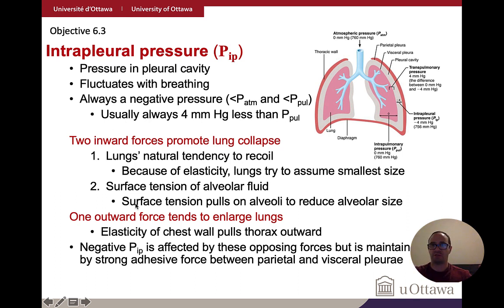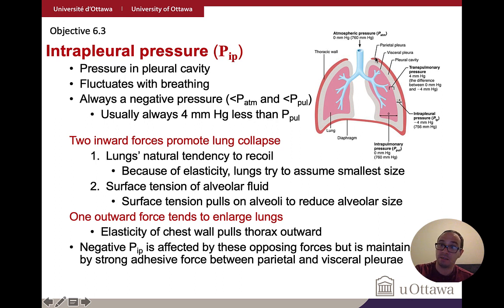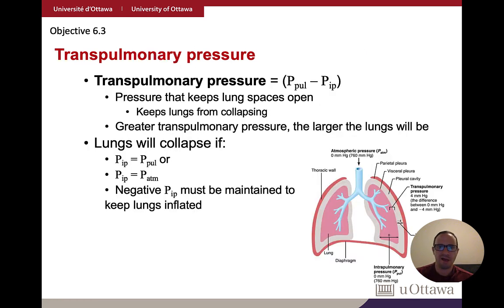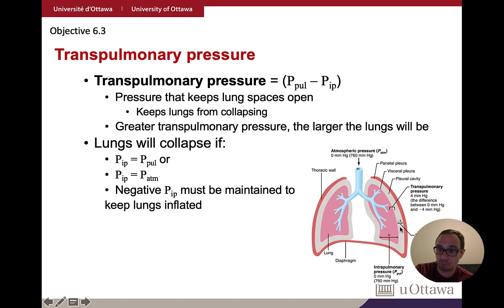These collapsing forces are counteracted by the elasticity of the chest wall, which pulls the thorax outward. The intrapleural pressure depends on the balance of all these forces. If everything is working properly, intrapleural pressure is always less than intrapulmonary pressure. If it becomes equal to or greater than intrapulmonary pressure, the lungs collapse. Transpulmonary pressure is simply the difference between these two pressures.